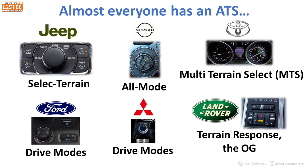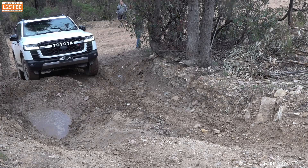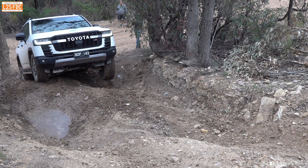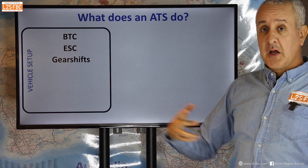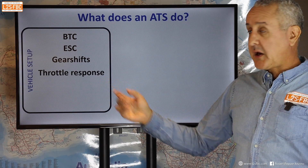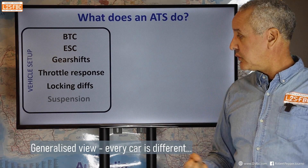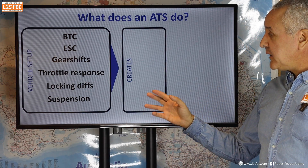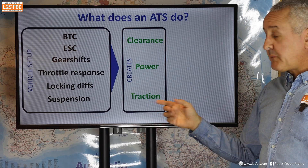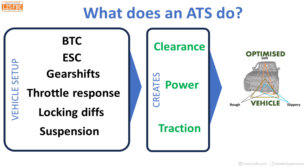What does an ATS actually do? It changes things on the vehicle to adapt to the terrain: brake traction control (BTC), electronic stability control (ESC) calibration, automatic gear shift behaviour, throttle response, locking differentials if computer-controlled, and suspension firmness and height. Together these create better clearance, better power, and better traction according to conditions, leading to a vehicle optimized for soft, rough, or slippery terrain, or something in between.